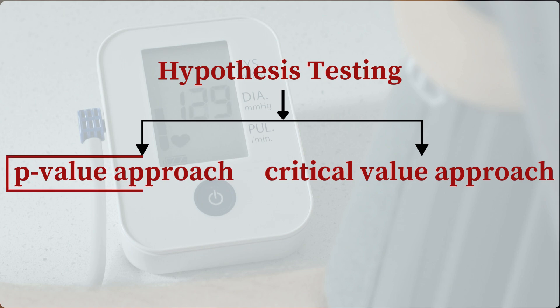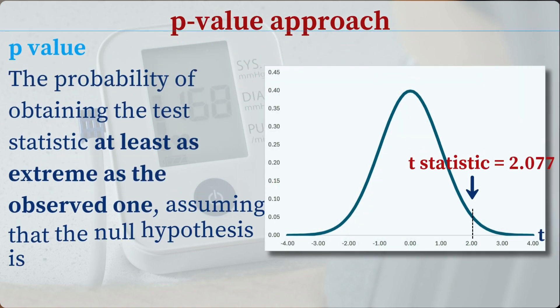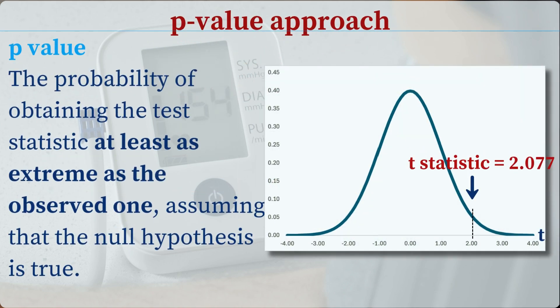One common approach is to calculate the p-value, which represents the probability of obtaining the test statistic at least as extreme as the observed one, assuming that the null hypothesis is true. This probability is visually represented by the area under the sampling distribution curve that lies beyond the observed test statistic.